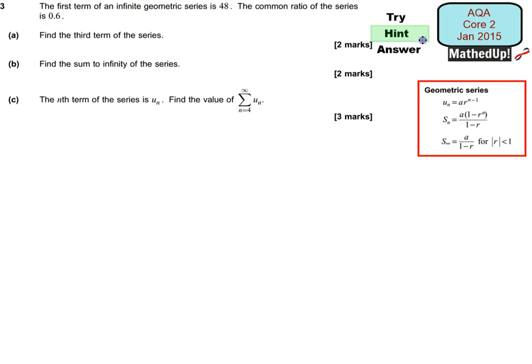For the next part of this video I'm going to give you a hint as to how you can go about answering this question. The first term of an infinite geometric series is 48. The common ratio of the series is 0.6.